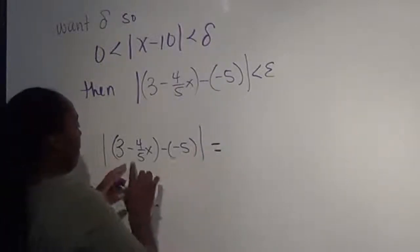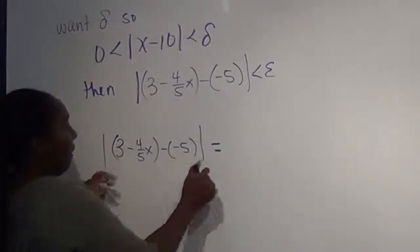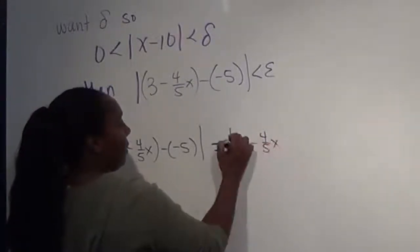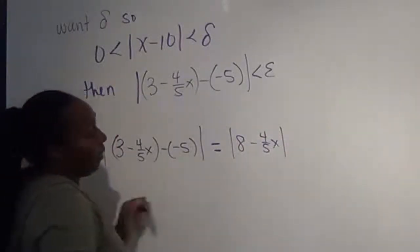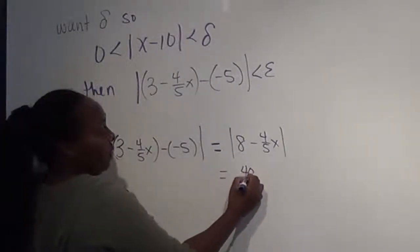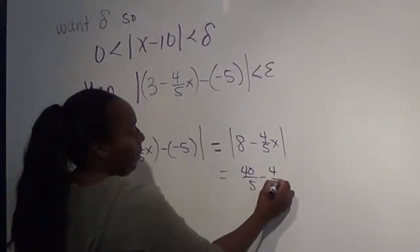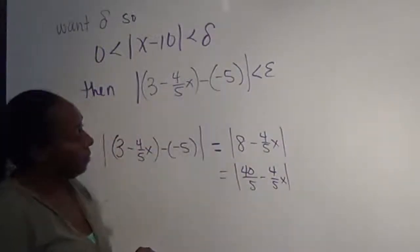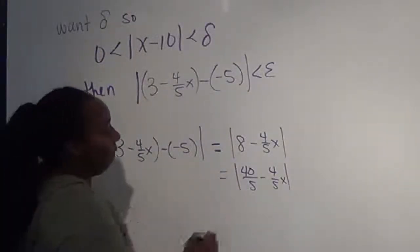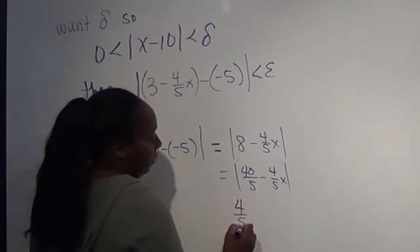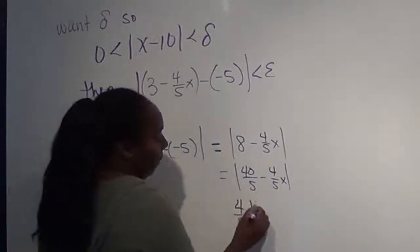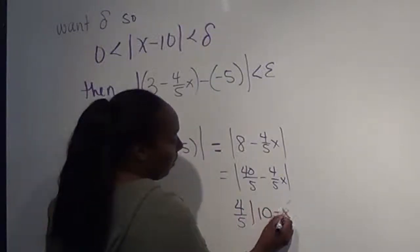This is going to be plus a 5 and 3, so that's going to be an 8 minus 4/5 x, which we can think of as 40/5 minus 4/5 x. So here we can factor a 4/5 out, or if you like the absolute value of 4/5, that'll come out. And then that'll leave us with a 10 minus x.